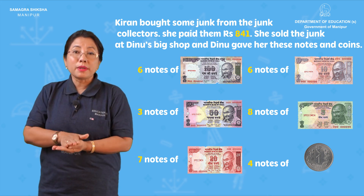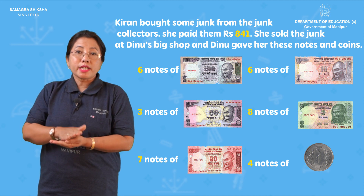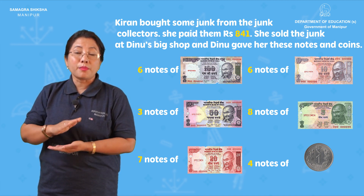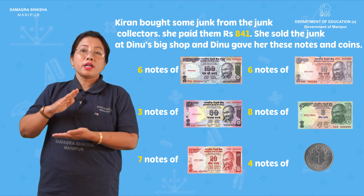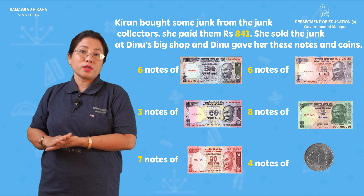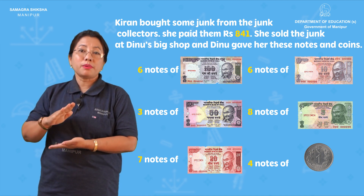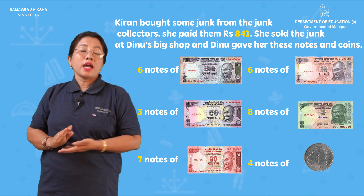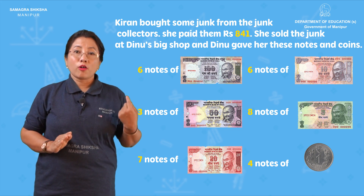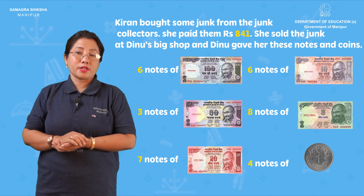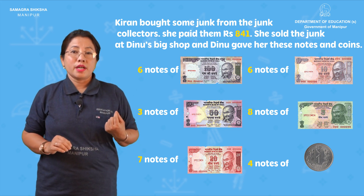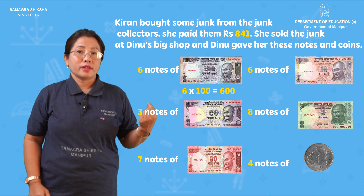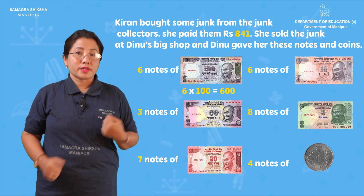Multiplication is a repeated addition of the same number. So if you give 100, I will say 6 times 100. What is the result? 600.